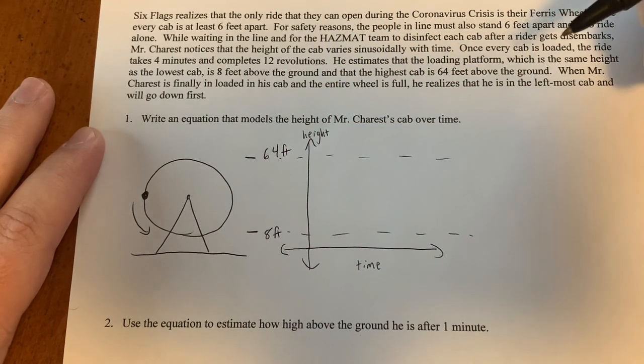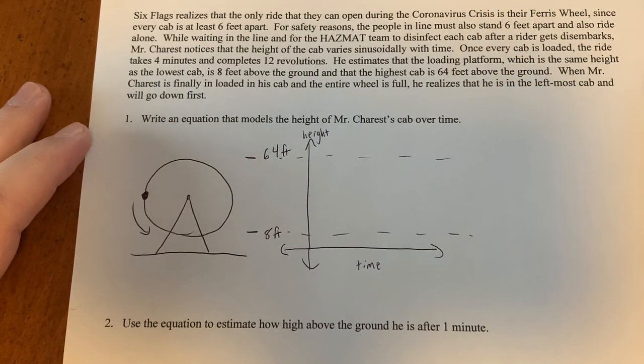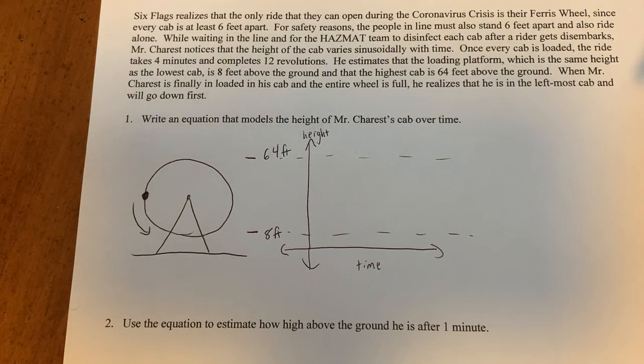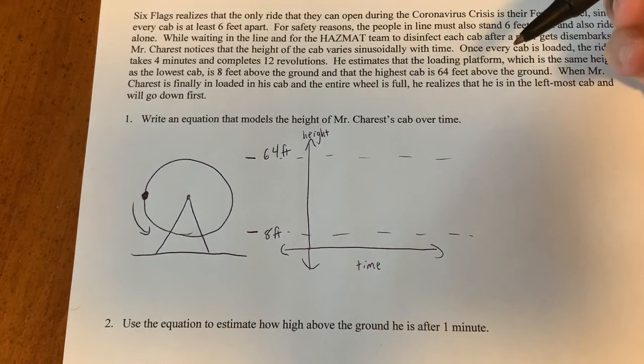Our x-axis is going to be time. And our y-axis is going to be height. Because pretty much any time you have time as a variable, it's going to be your x-axis. And it also makes sense that our vertical height is going to be our y-axis. That's our vertical axis.